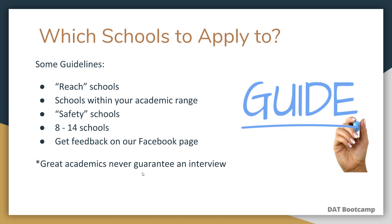Which schools should you apply to? Apply to a few 'reach schools' — schools with stats above yours — mostly schools within your academic range, and a few 'safety schools' below your range. A good ballpark number is 8 to 14 schools; the average applicant applies to around 10. Get feedback on your school list from the DAT Bootcamp Study Group on Facebook, other Facebook groups, or Student Doctor Network. Keep in mind that great academics never guarantee an interview — you might get rejected from safety schools while getting into reach schools, and that's okay.